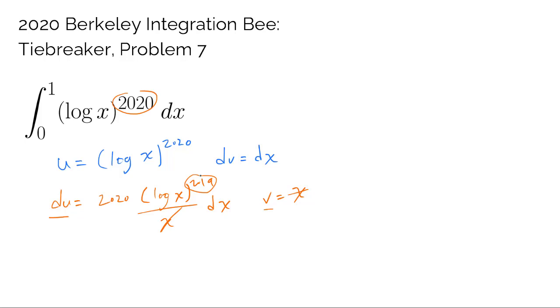And aha! We have an idea. You can keep on trying this process, and it's going to lower the power by 1 each time. So eventually, the power is going to go all the way down to 0 or 1. So it seems like we can use recursion to finish this problem, and so we will.